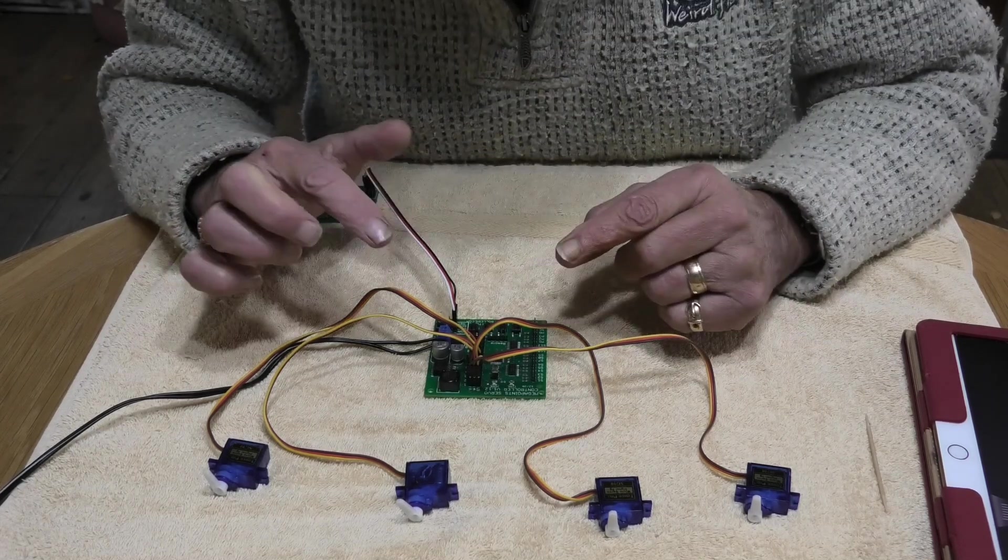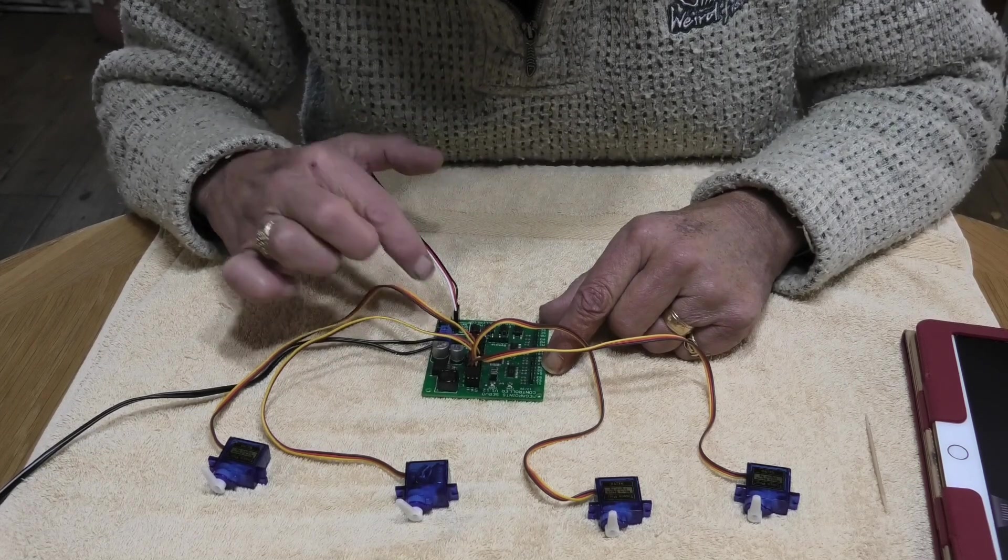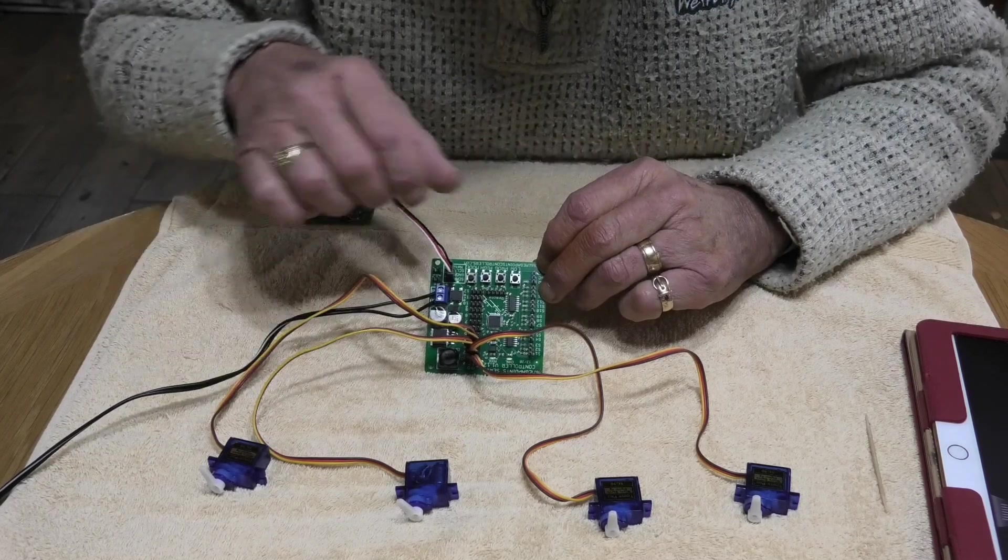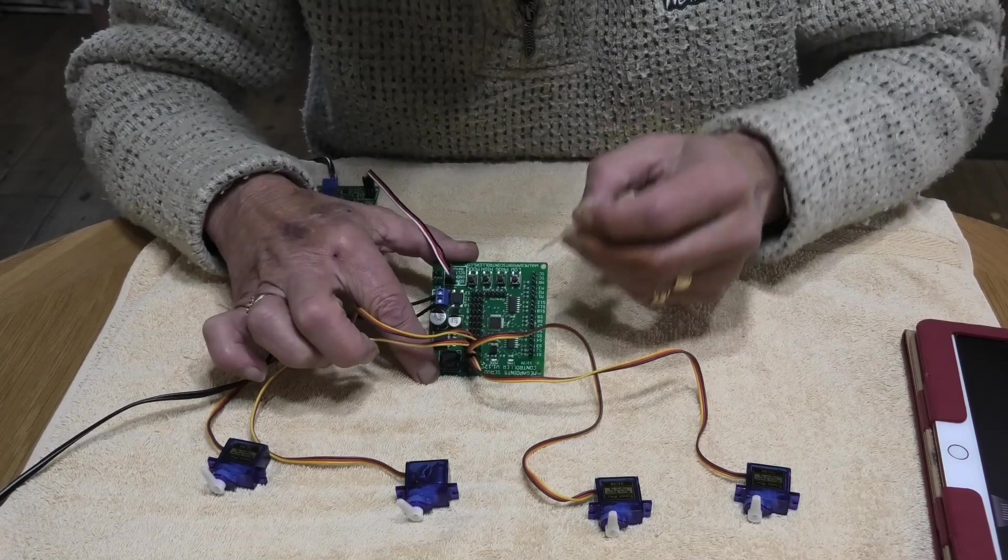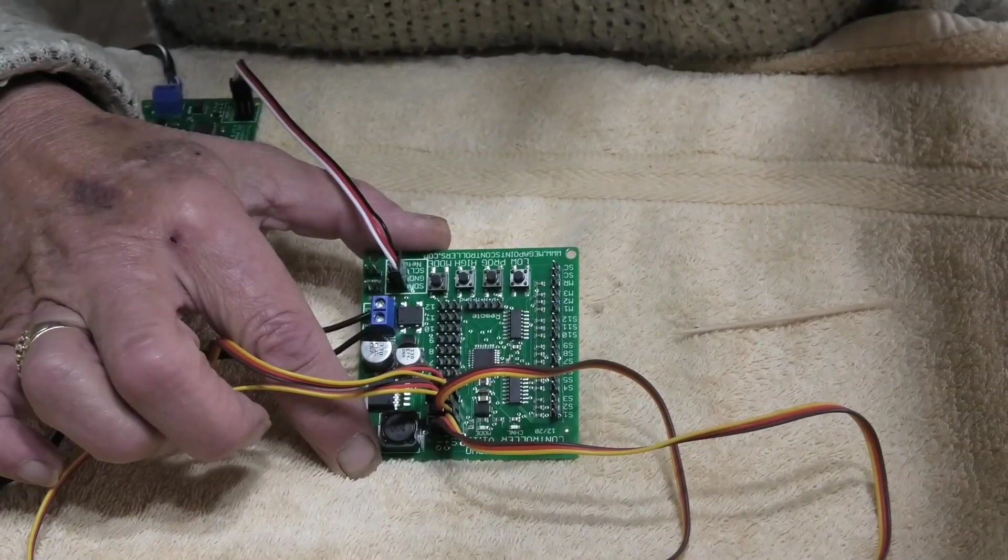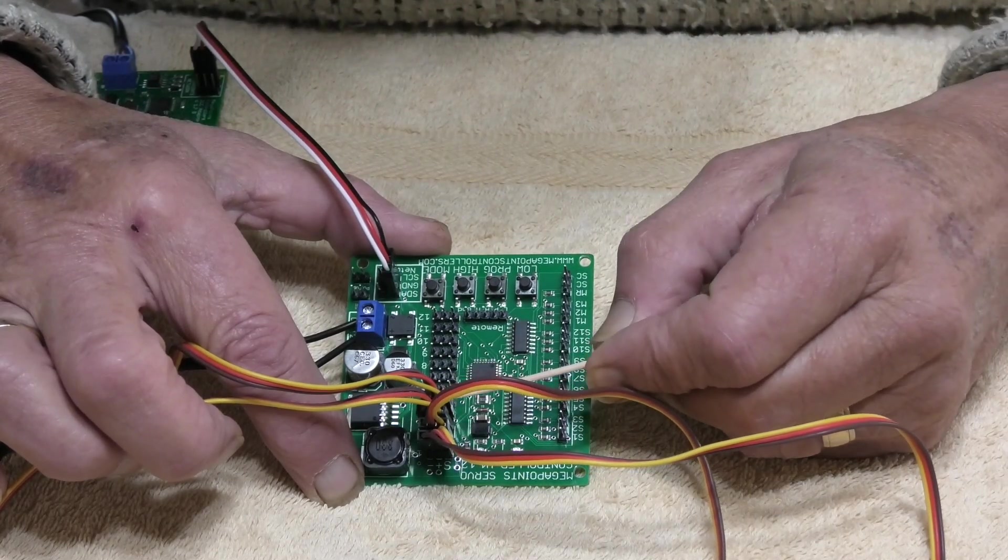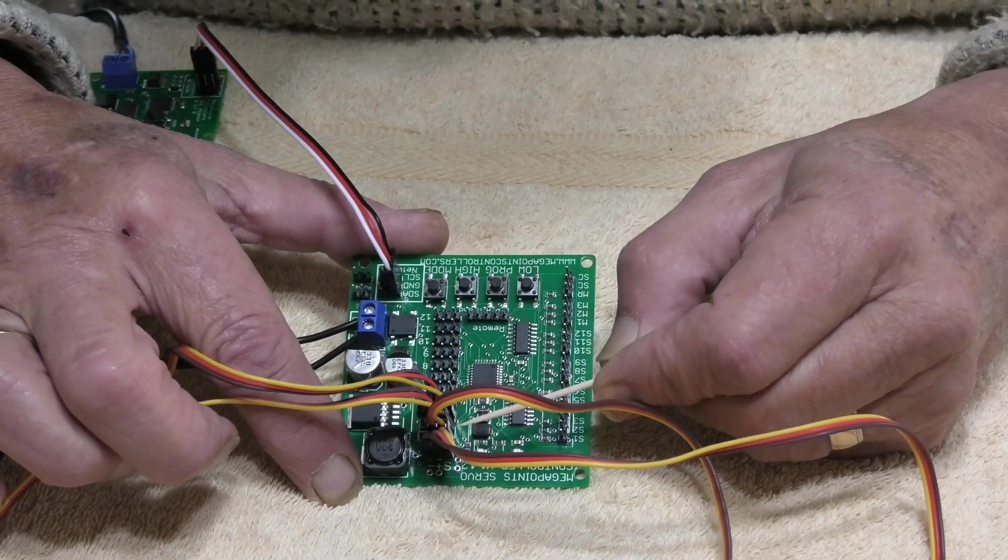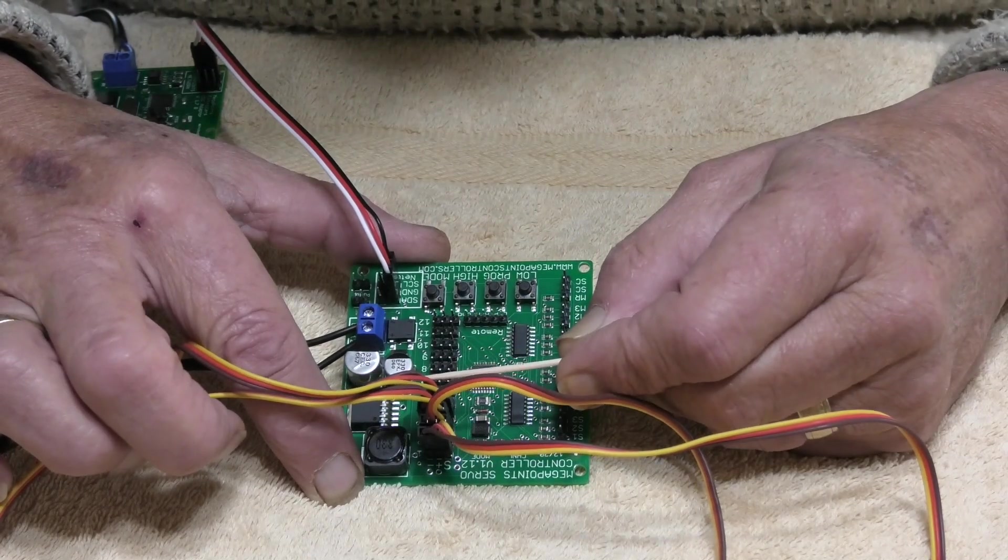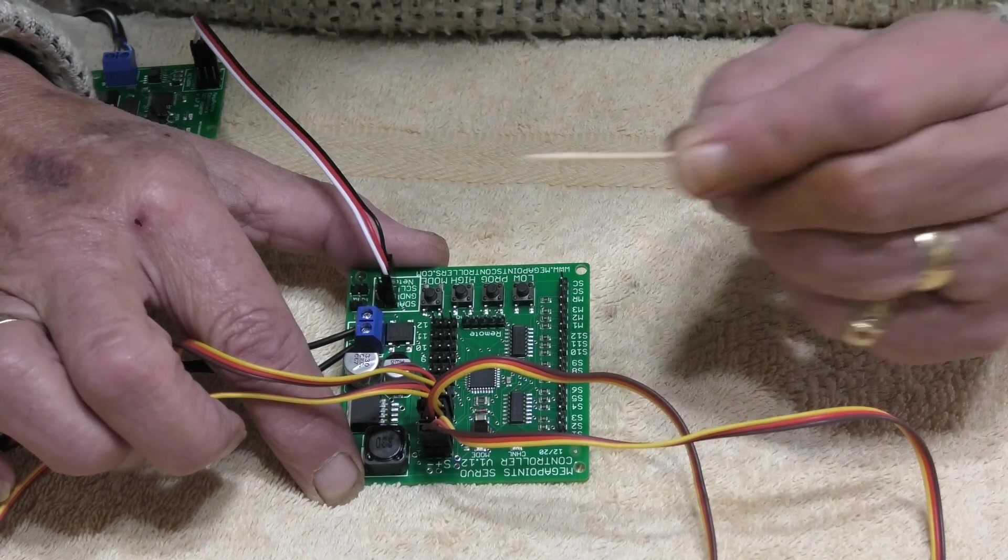There are three main parts to the DCC controller, the Megapoints controller board. This row of three sets of terminals, which there are 12 of, is where you plug the servos in. What you can have in effect for each control board is up to 12 servos. At the moment I only need four, two for the raising of the water and one each for each gate at either end.